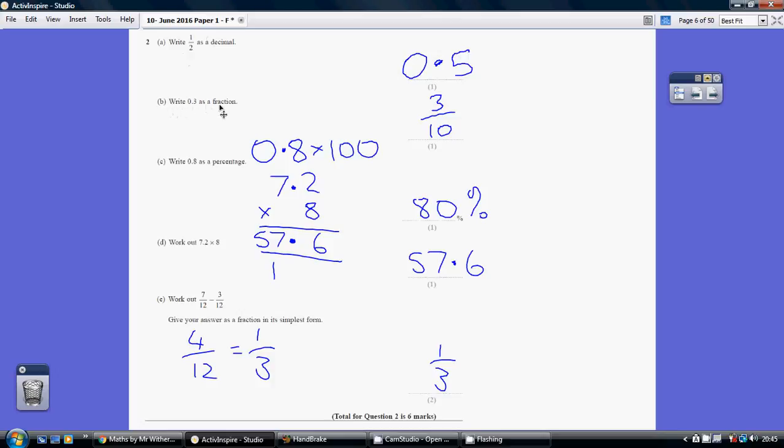Part B, write 0.3 as a fraction. As I was just saying, the column to the right of the decimal point is the tenths column. We've got 3 in there, so it's 3 tenths.